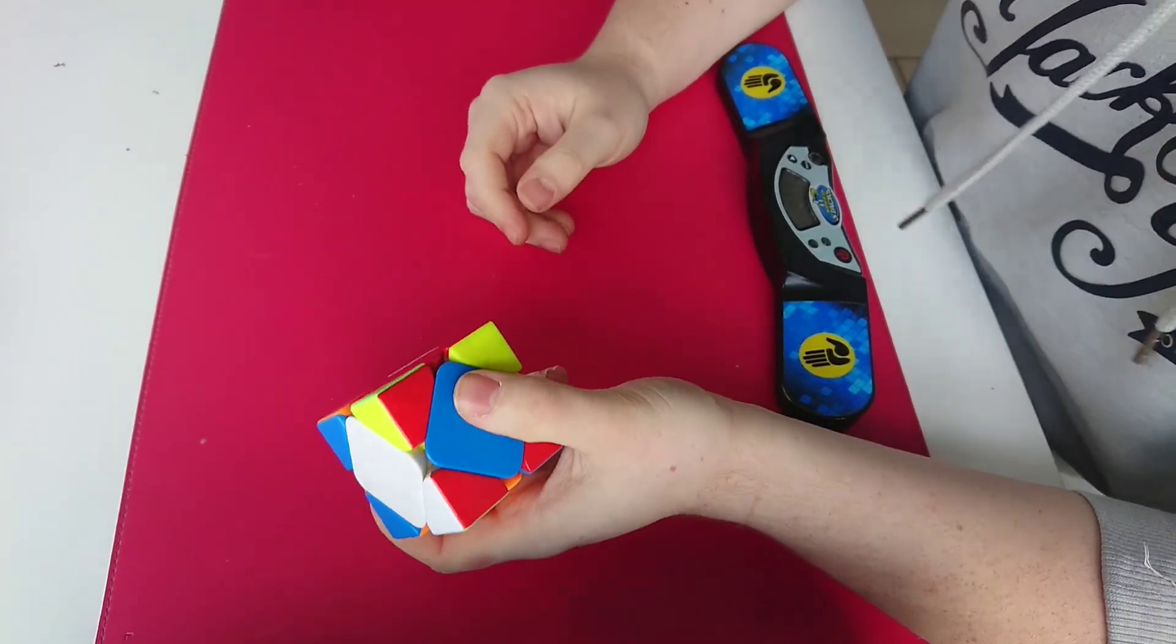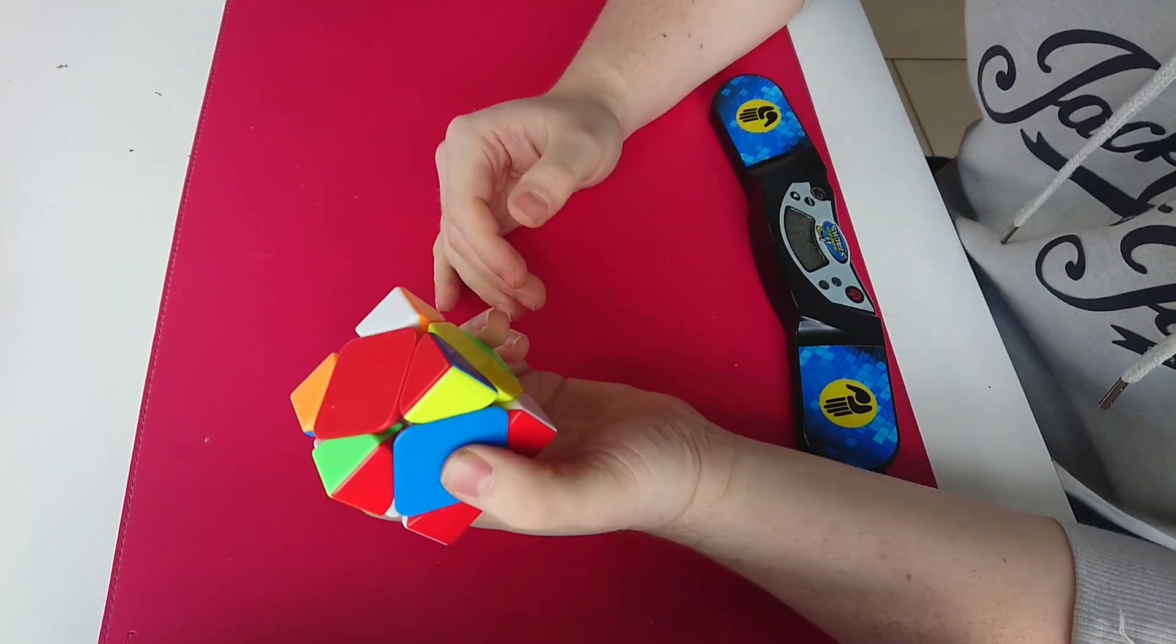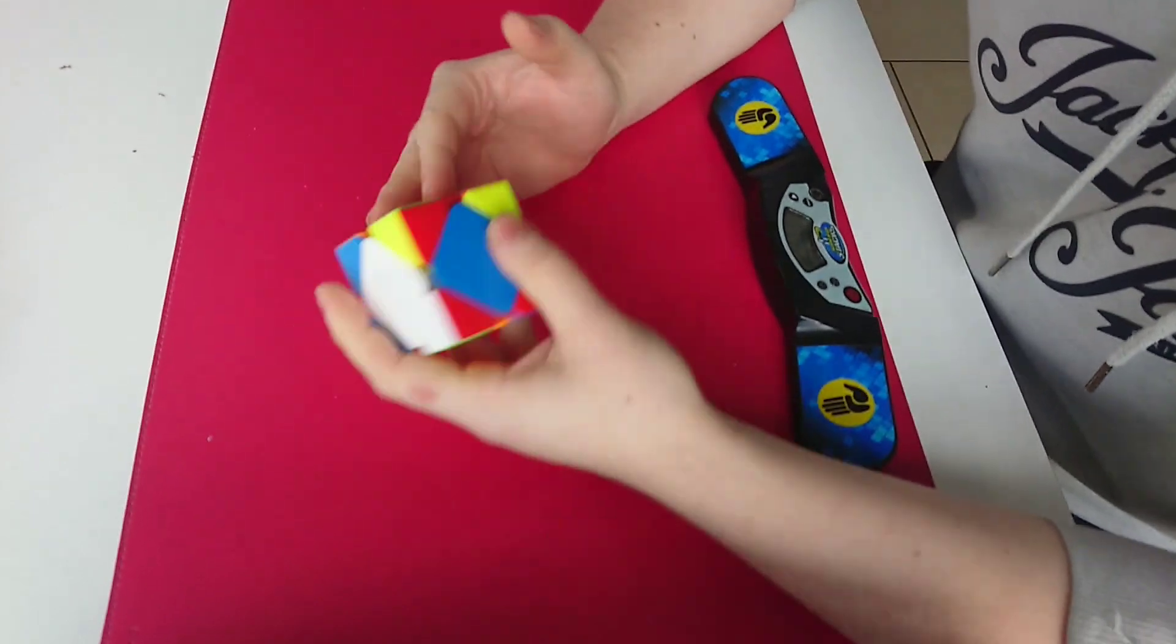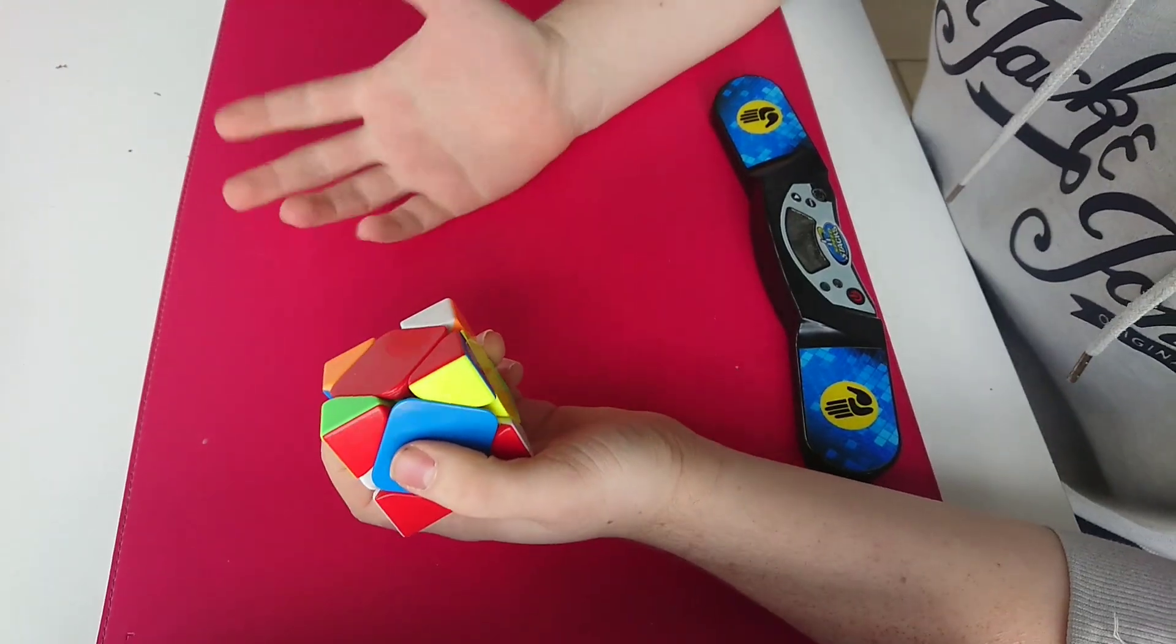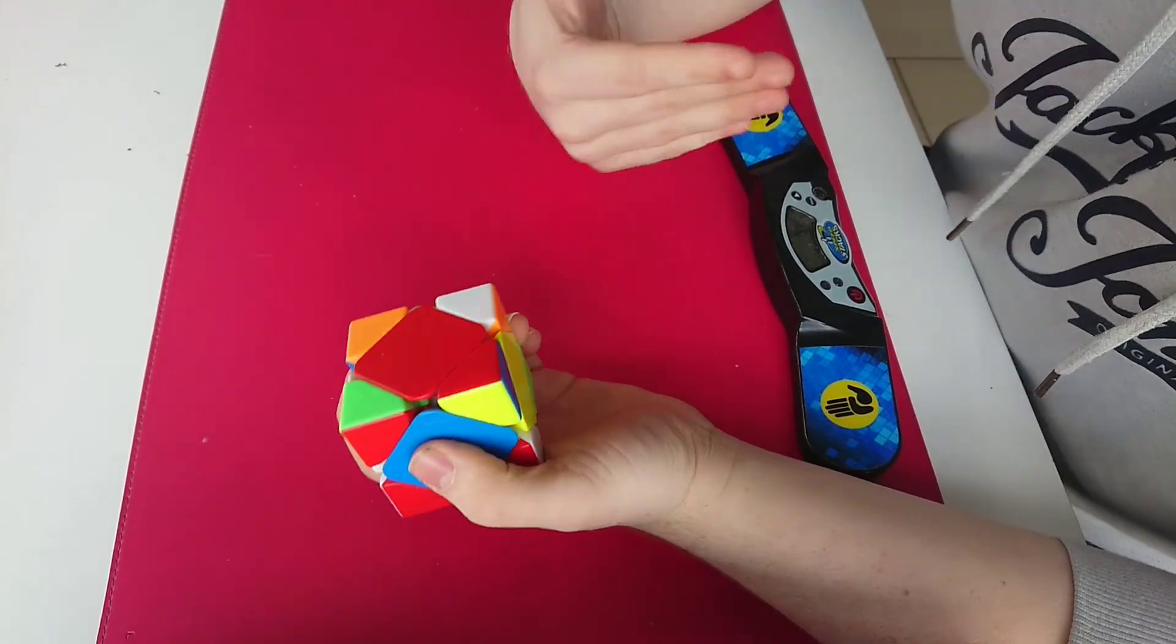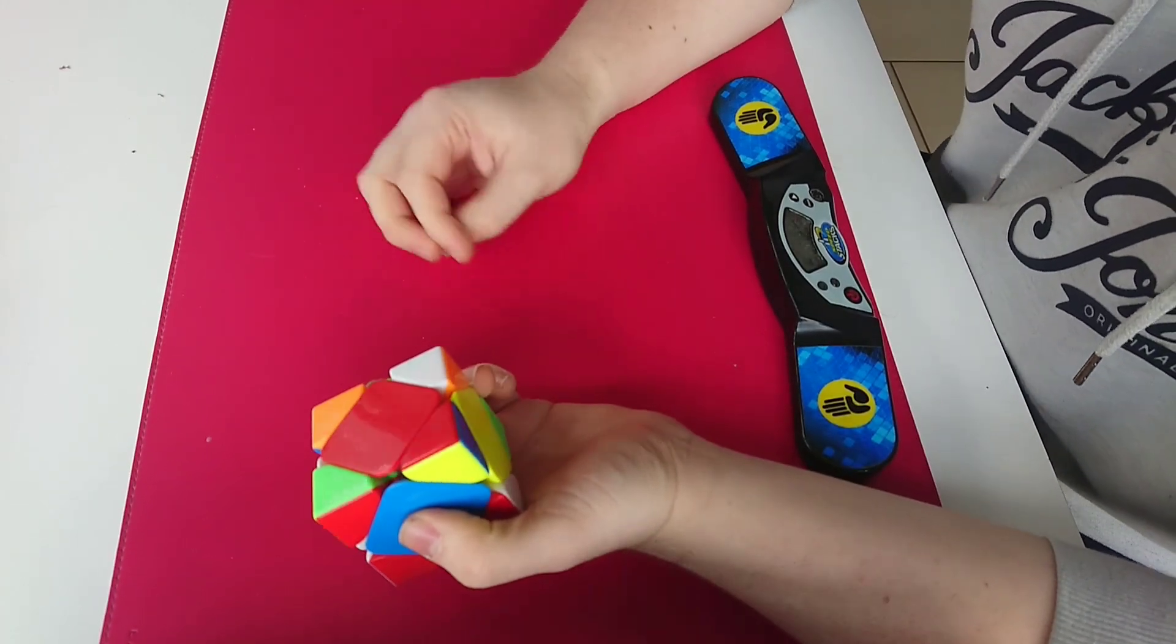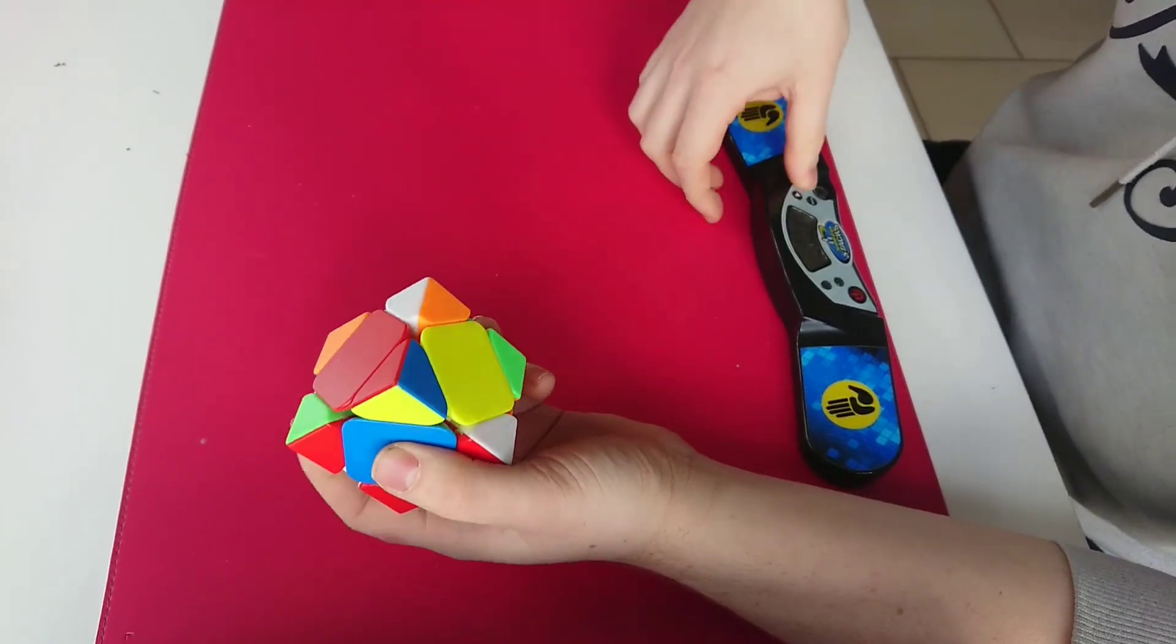Doing my solves multiple times has really helped me reduce the amount of lockups I get during solves and it also helped with my TPS. Nowadays when I get a lockup during a solve I most likely will be doing the scramble again and again until I don't get the lockup anymore. Then I will remember or try to remember the parts where I did get lockups and I will try to remember how I can prevent them in the future.